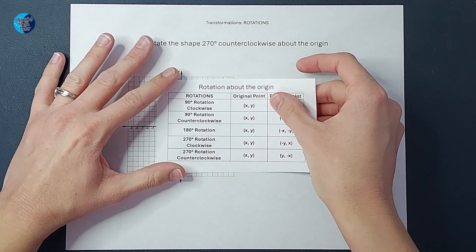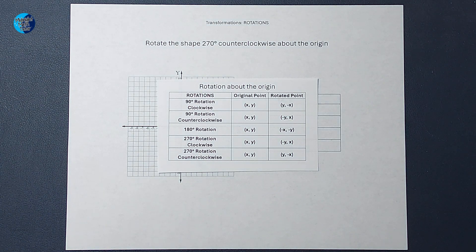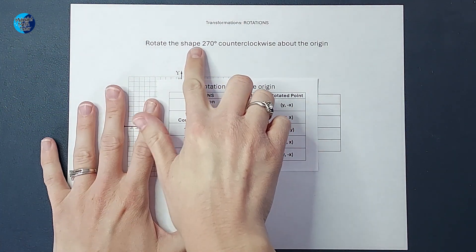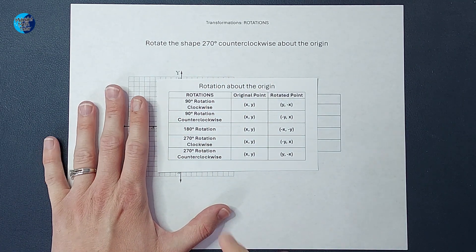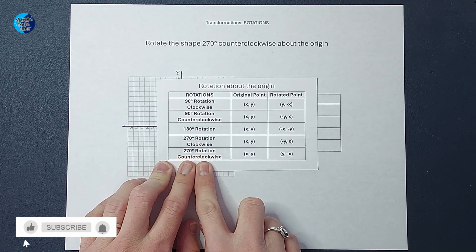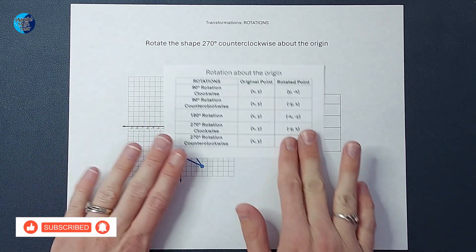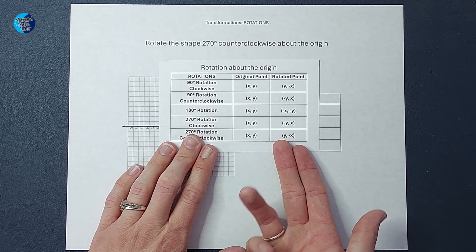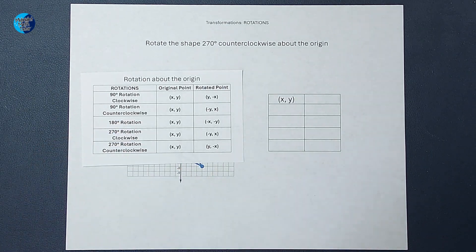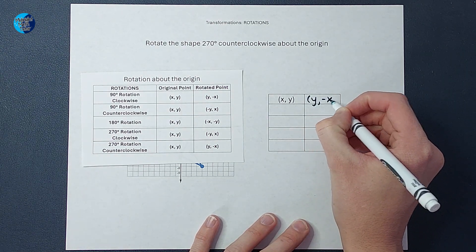For this video, we are going to use these rules. Now these rules come from somewhere, and at the end we're going to show you why these rules work. But for now, we are going to look at how to rotate this shape 270 degrees counterclockwise. When I look here, if my original point on my shape is (x, y), what we're going to do is flip x and y and change x's sign. Now if that sounds crazy, just stick around and you'll probably understand what we're doing.